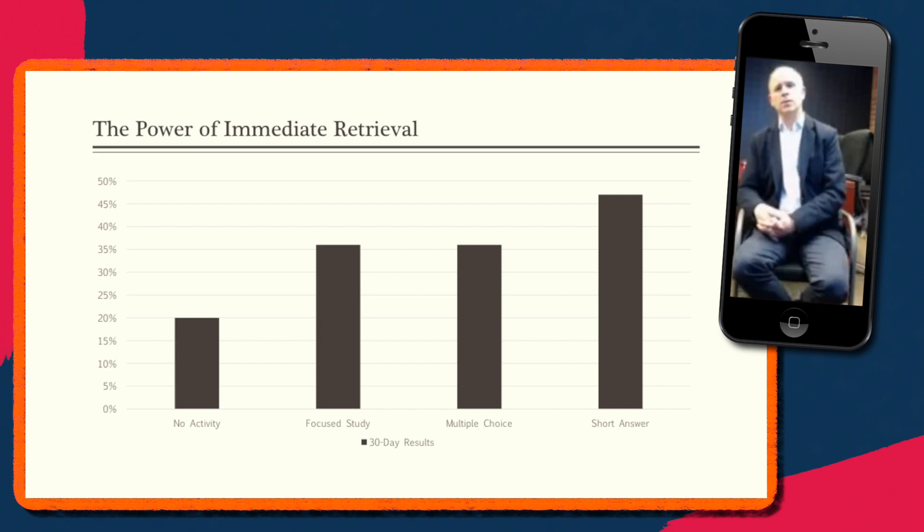The second group of students got a focused study guide afterwards, and they were able to study some of the key terms from the lecture. They did that quickly right at the end of the lecture. And you see that this does provide a learning boost for the students. So right at the end of the lecture, if they had this focused study guide, they were able to score around 36% on that exam.